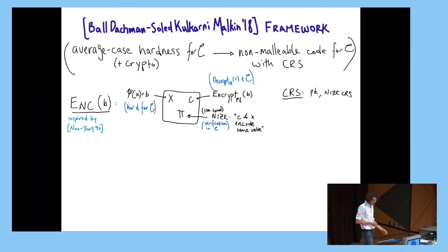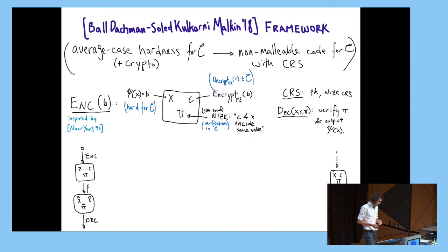So our CRS is this public key, the NIZK CRS. And to decode, remember, even though we're using crypto, there's no secrets. It's a code. Everything is public. So to decode, we're going to simply verify the proof using the CRS, and then we're going to evaluate psi on X. So how do we prove that this is a non-malleable code? We're going to prove something slightly stronger than normal non-malleability, but ignore it for now.